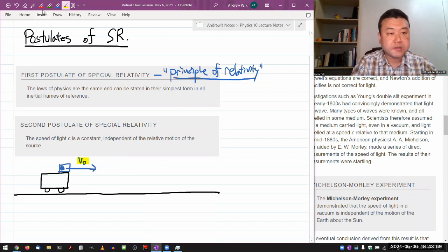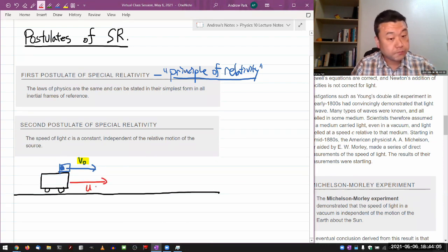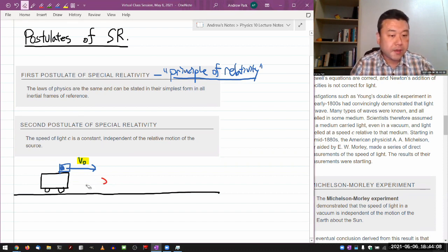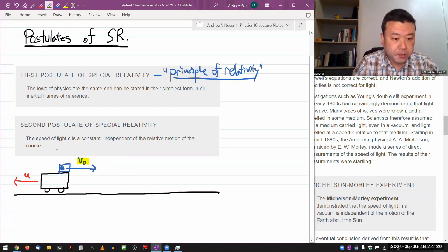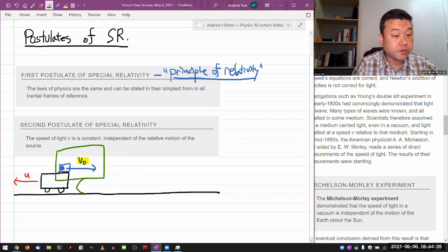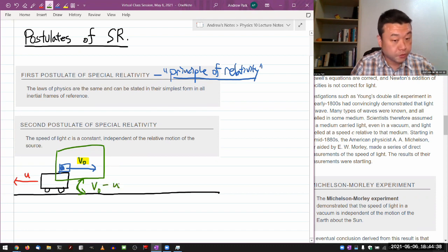Now, if you imagine this situation changing so that the cart is either moving in one direction at speed u, or to make it fun, you can make it move the other way. If you imagine the cart moving the other way at speed u, then I think most people can figure out what would be the speed of this ball if it's being measured relative to the ground.